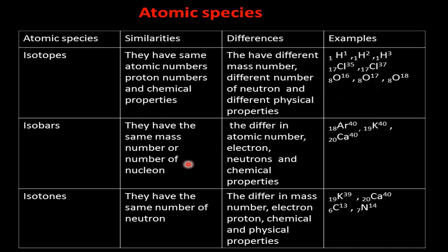Isobars: Similarities: same mass number (nucleon number). Differences: different atomic number, electron number, neutron number, and chemical properties. Examples: argon-40, potassium-40, and calcium-40 all have the same mass number but different atomic numbers.